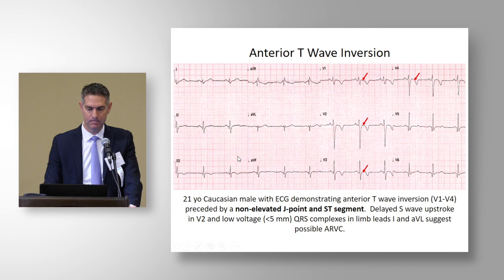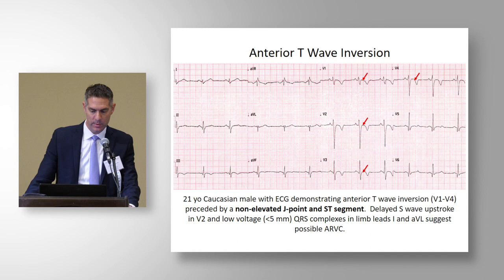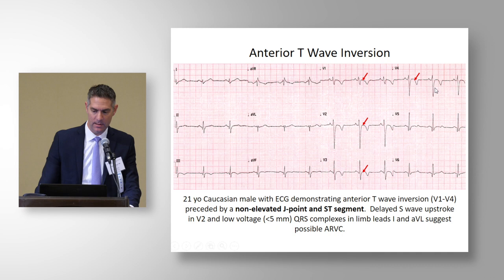Anterior T-wave inversion — this is an example of someone ultimately diagnosed with ARVC. This is in a 21-year-old Caucasian male, so outside the range where we can call this juvenile T-wave inversion. It also extends beyond V3 into V4. The arrows are pointing not at the T-wave inversion, but at the non-elevated J point and non-elevated ST segment prior to the T-wave inversion.